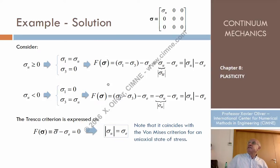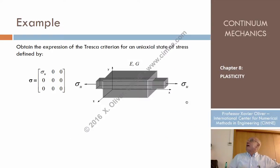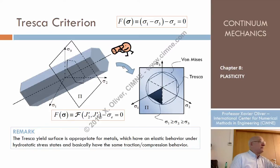For 1D cases, the Tresca criterion can be written as: modulus of sigma_u minus sigma_e equals zero — which is the same as for von Mises. Whenever we move along one of these axes, we are in a uniaxial stress case, and in that case both criteria coincide.